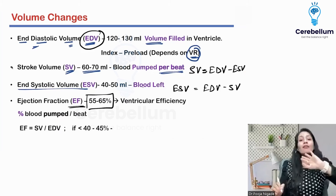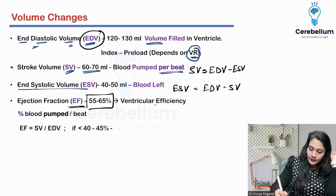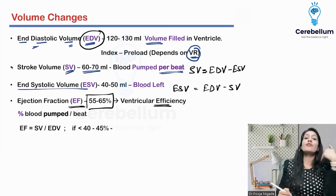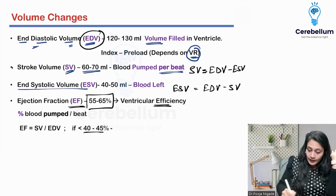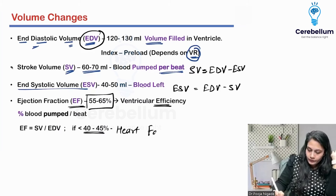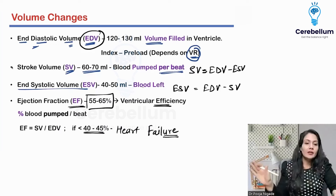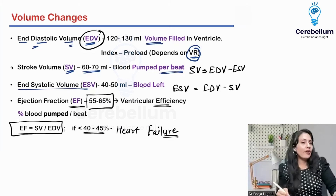If the ejection fraction is more than 55%, you pass — your ventricle is efficient. If it is less than 50%, say 45% or 40%, that is going to give me a sign of failure — heart failure. It means the ventricles are not able to contract enough to eject even 50% of the blood, and I will call it ventricular failure.